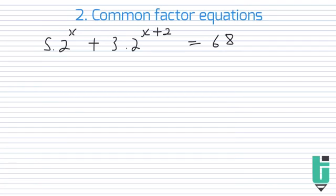So in this case, we'll consider the side that has multiple terms. So on the right side, we see we only have one term, it's just a 68, we can't really factorize anything there. But on the left side, we see we have two terms, we have a term 5·2^x, and a term 3·2^(x+2). So essentially, what we want to try and do is factorize something out on this side, on the left side. And then we'll see how that will help us.